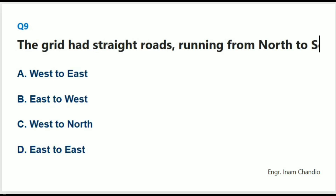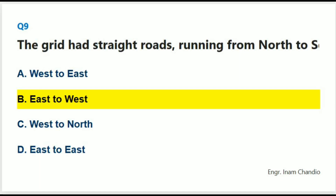The grid had straight roads running from north to south and: The correct answer is B. East to west.